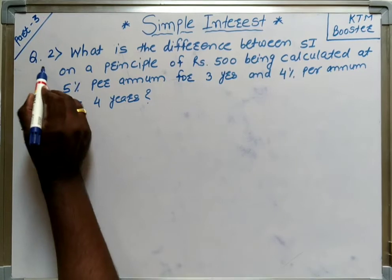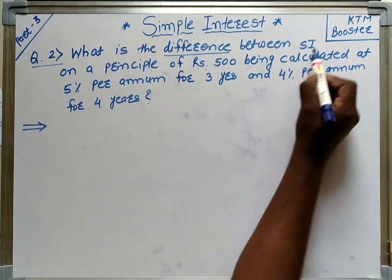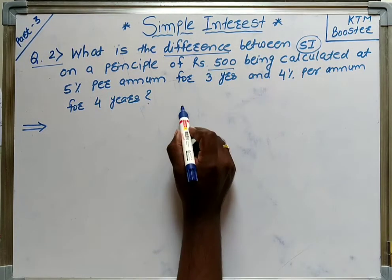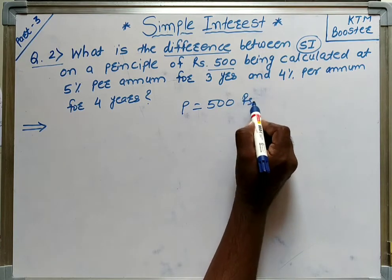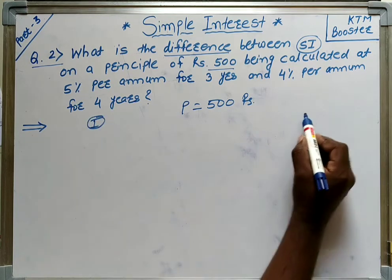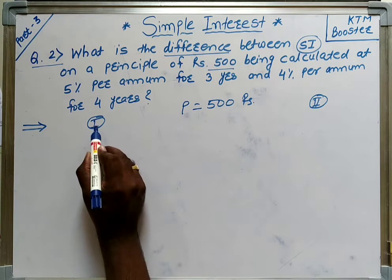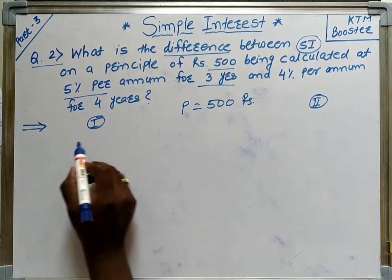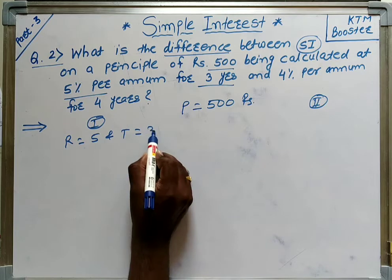Now we will see the second question — this is a very interesting question. They have asked the difference of SI. The principal is the same for both cases, that is 500 rupees. We will see Case 1 and Case 2. In both cases we have to calculate SI. For Case 1, we calculate SI for R equal to 5% and time period equal to 3 years.